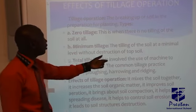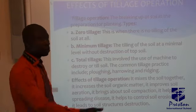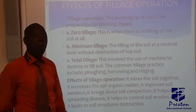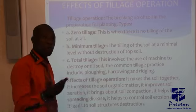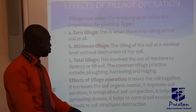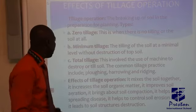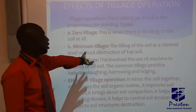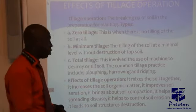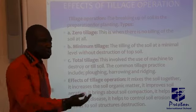When you are talking of zero tillage, there is no tilling of the soil at all — you just slash the weeds away or apply chemicals, then you plant directly without disturbing the soil. Under minimum tillage, tilling of the soil is at a minimum level without destruction of the soil — you just till lightly.